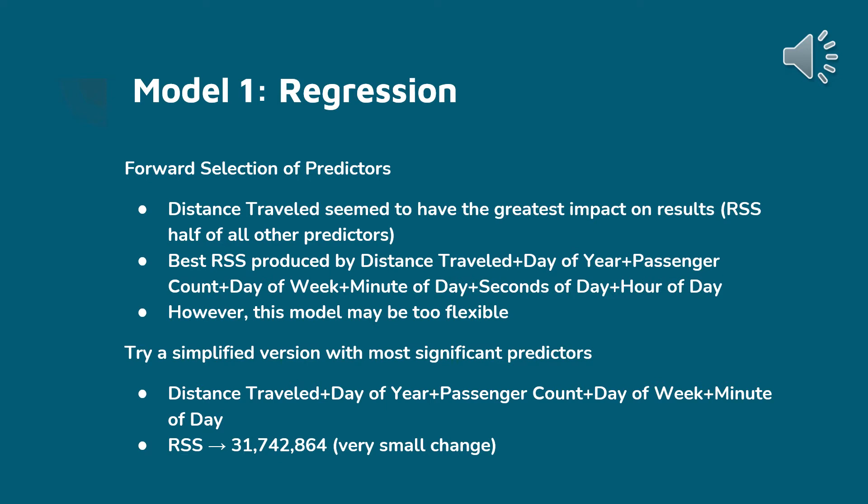Next, we stepped through all of the other predictors and got the best RSS starting with distance traveled and ending with hour of the day. However, with a lot of predictors, this model might be a little too flexible. To compare, we tried a simplified version with the most significant predictors: distance traveled, day of the year, passenger count, day of the week, and minute of the day. In this case, the RSS only had a very small change, giving us three sets of data to start with in terms of prediction.